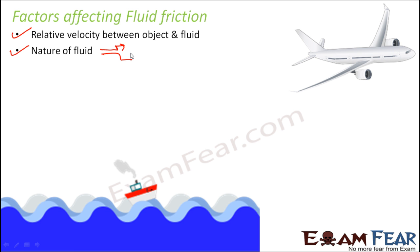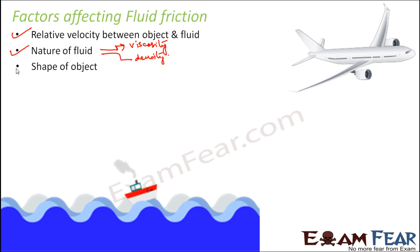If you compare water and honey, a boat will move more easily through water because water is less viscous. So viscosity plays an important role, along with the density of the fluid — these determine how much friction a particular fluid will offer. That is why it is easier to move an object through air than through water, because of the lesser density and viscosity of air compared to water.